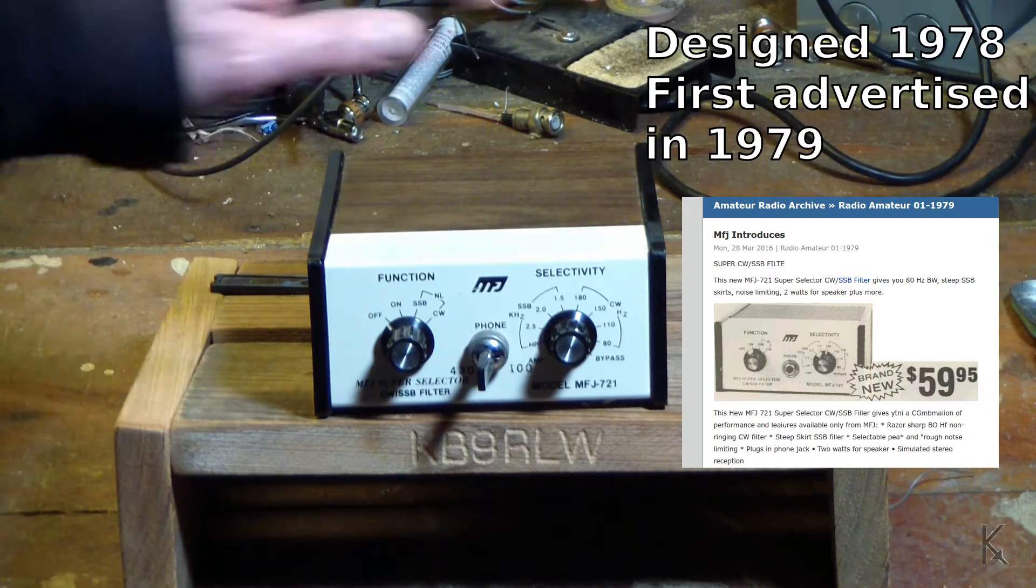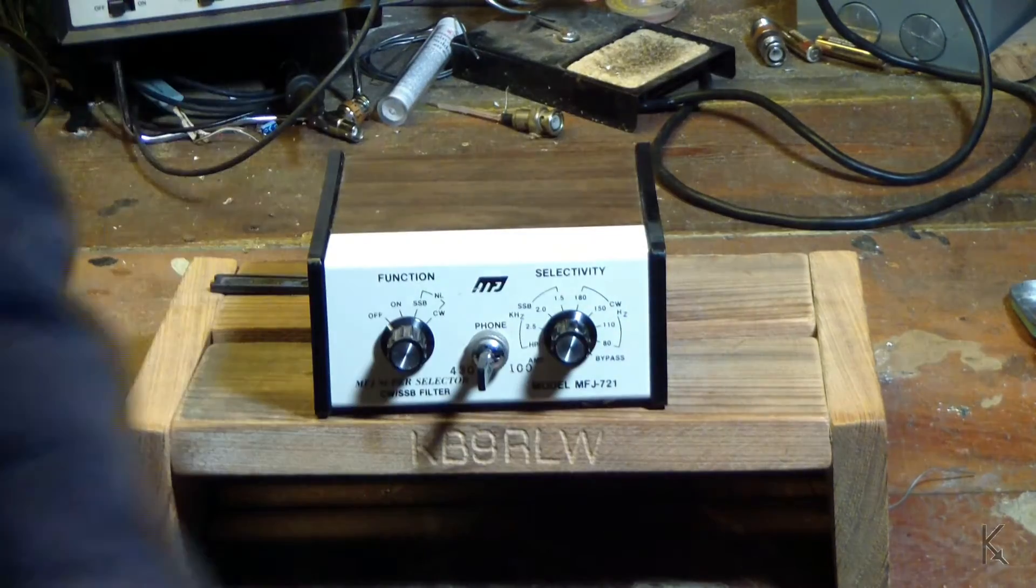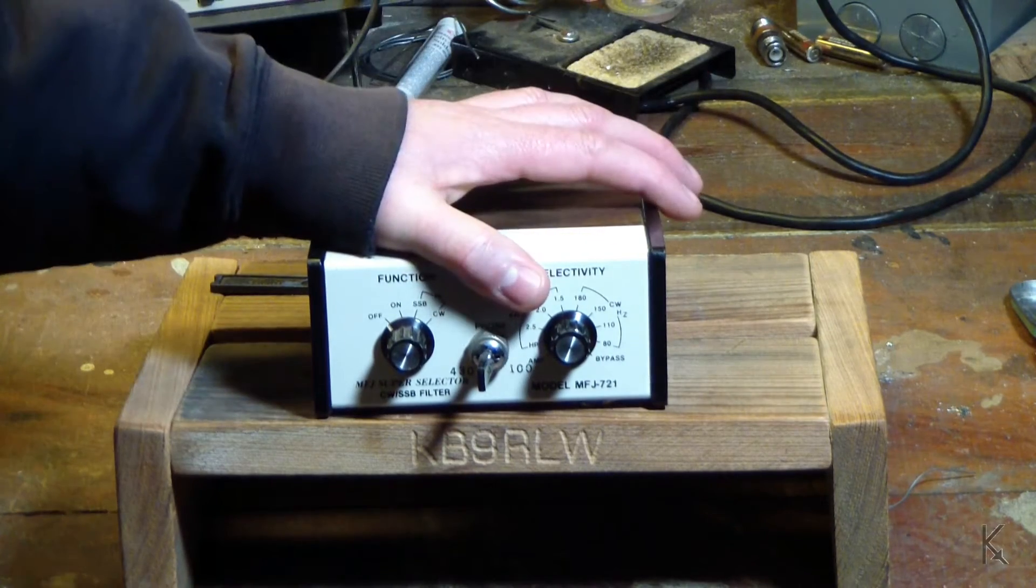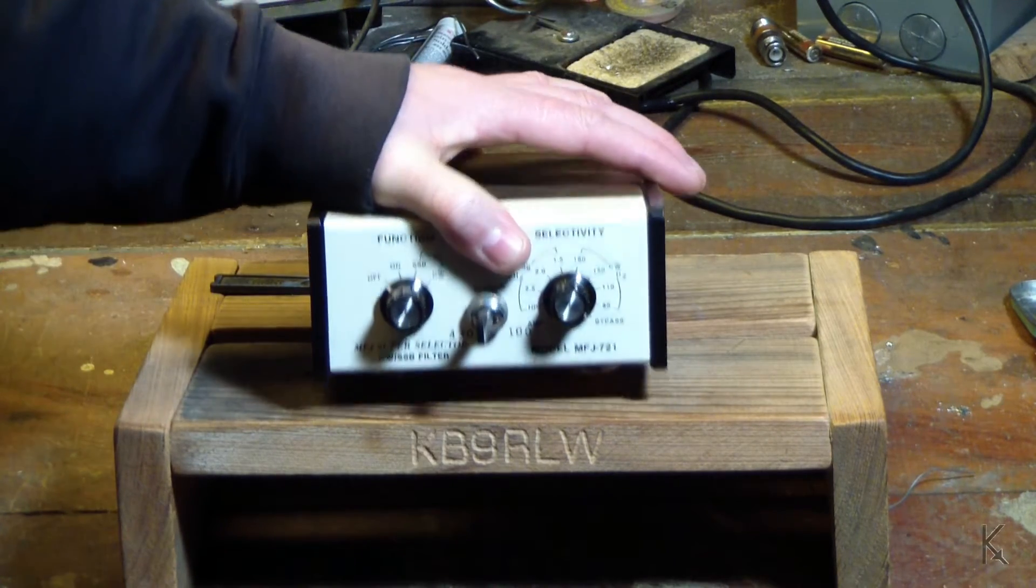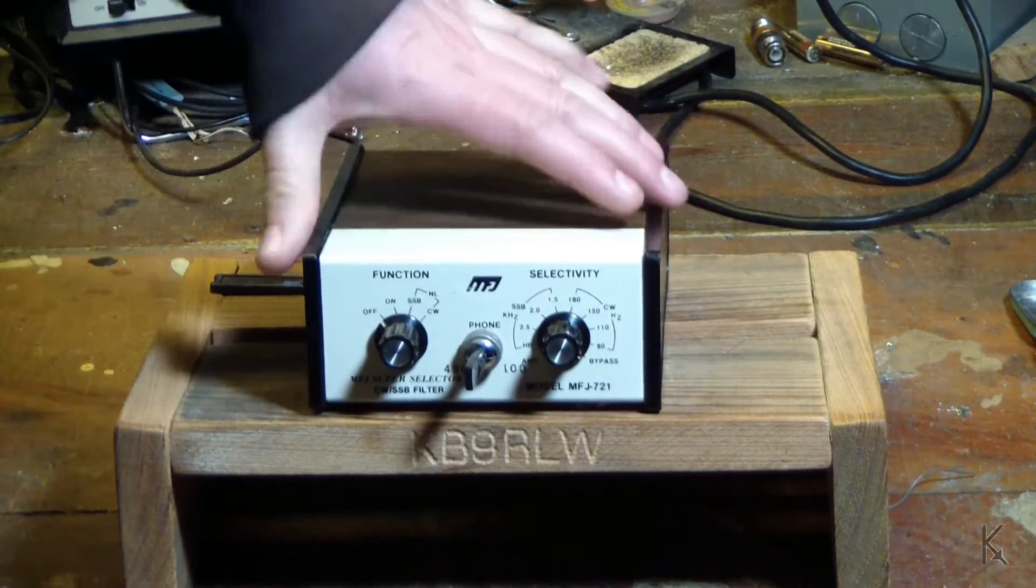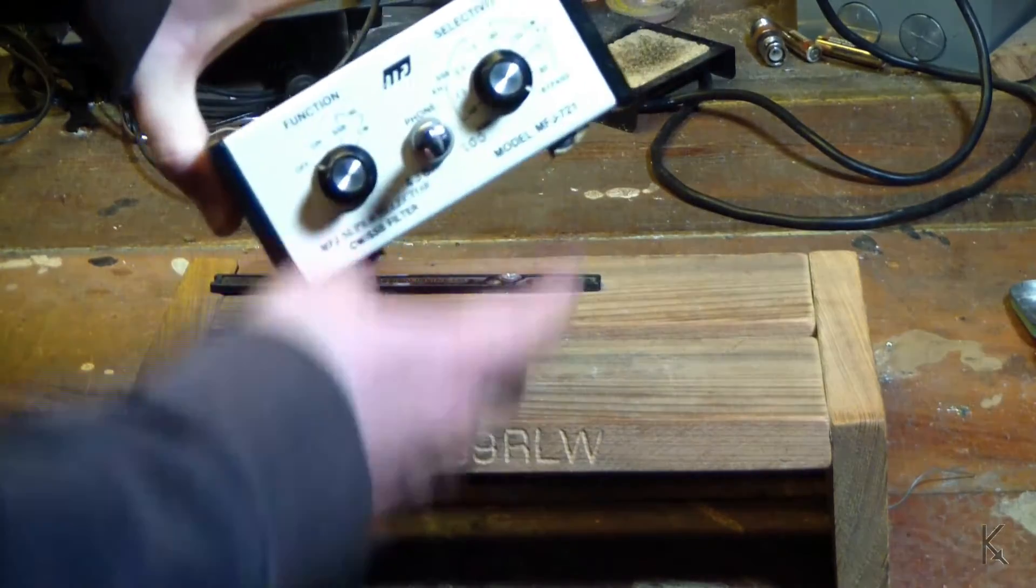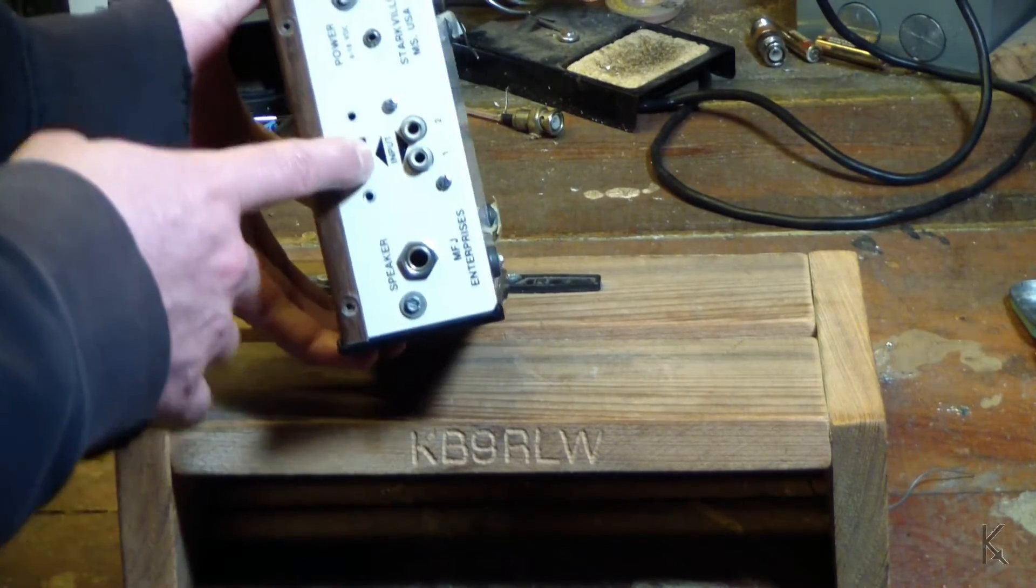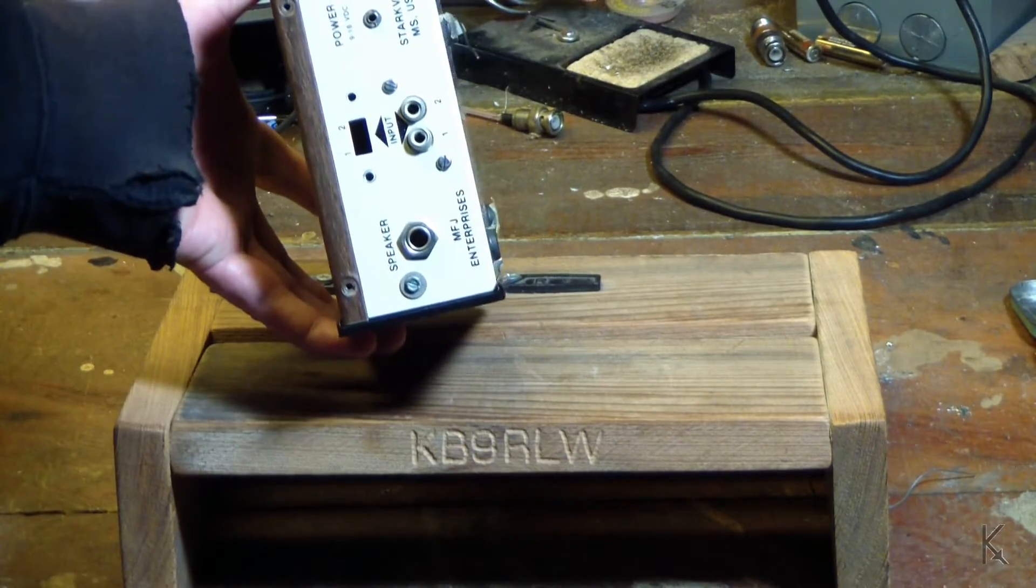What I'm thinking about doing with this thing is I'm thinking about building an L-Network tuner into this case. I'm not going to revive the filter. It's been butchered badly. There used to be a headphone jack up front here. There's a switch missing back here. I'm going to open it up and show you inside in a minute.